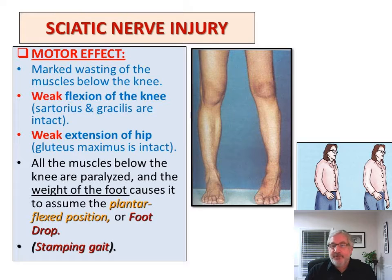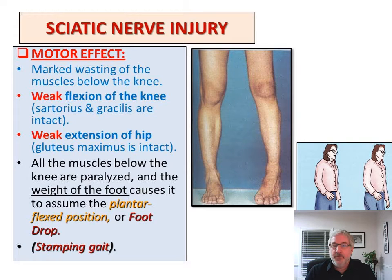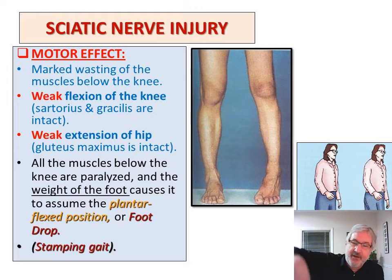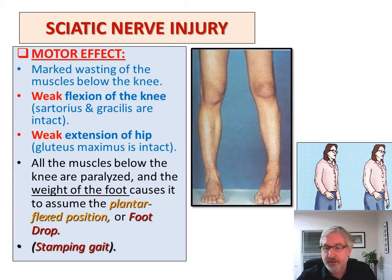What happens if you damage the sciatic nerve? You get what's called a foot drop, so you aren't able to extend the hip easily. You also don't flex the knee very well. You get motor wasting. The muscle below the knee would be paralyzed, and the weight of the foot causes it to plantar flex — it's called foot drop. Someone will walk along and plop their foot down. It's a kind of stamping gait.